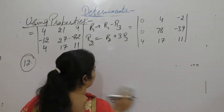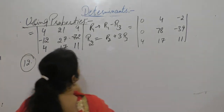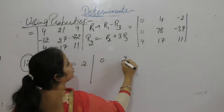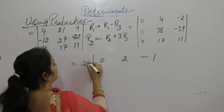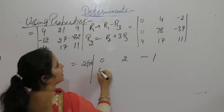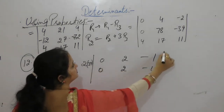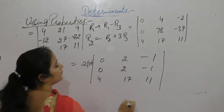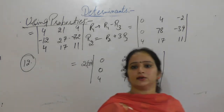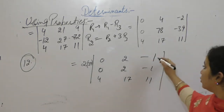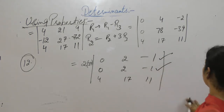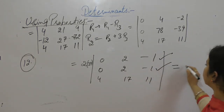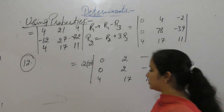In the next step, take 2 common from R1 and 39 common from R2. Now R1 and R2 have identical elements, so the determinant of this is 0.